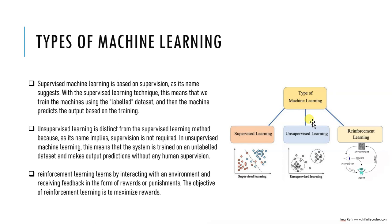Examples of supervised learning include image classification, speech recognition, classifying different types of diseases, or classifying fruits in a basket — determining which one is an apple, orange, banana, etc. These are problems where labels or classes are already given, which is why this type of learning is called supervised learning.